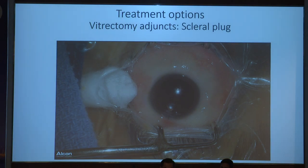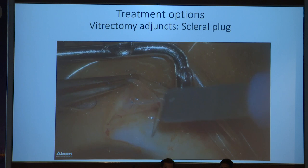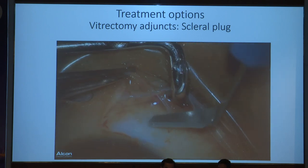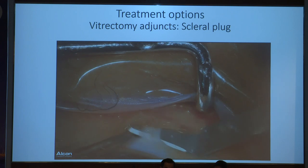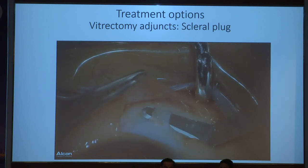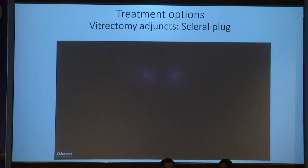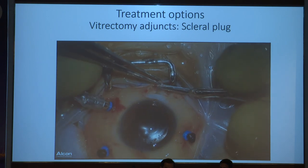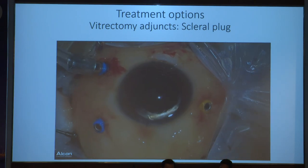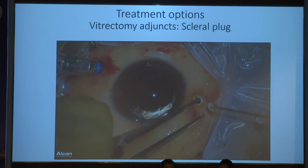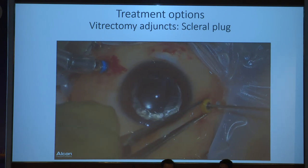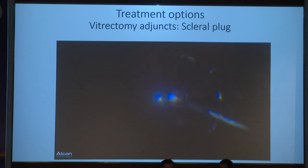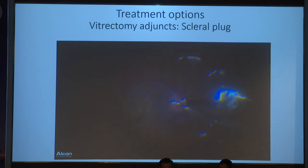All three ports are 25-gauge, but negotiating the scleral plug through a 25G port is difficult, so one port is converted to 23G. I do it under air — after a complete fluid-air exchange, you just take the plug and snugly fit it into the ODPIT. There is no bleeding, it is not difficult, and it stays for at least one to two years.